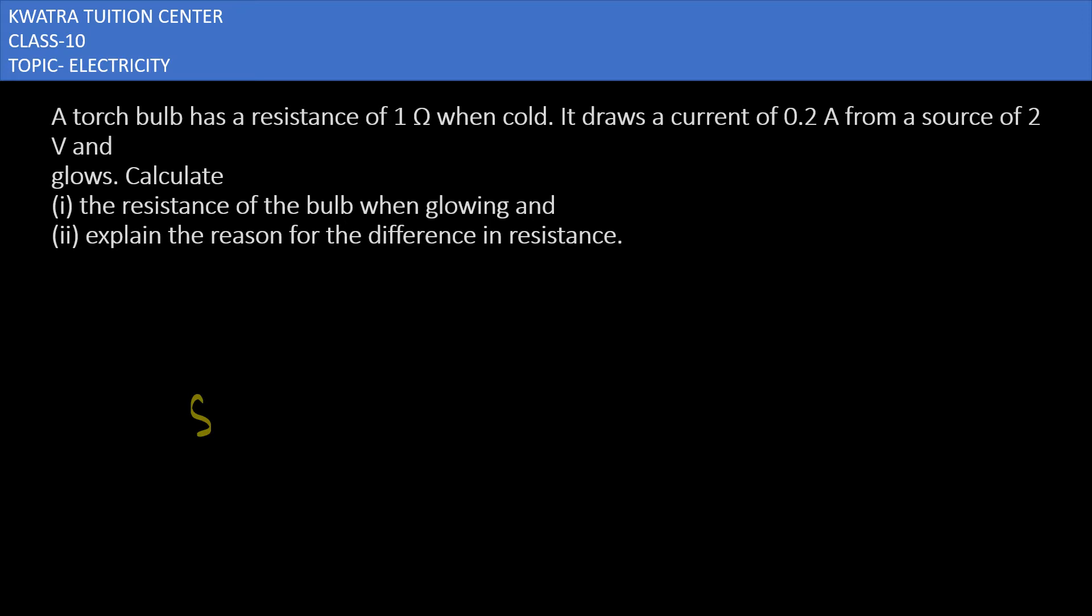So we need to find out resistance when it is glowing. Resistance, how do we write? R is equal to V over I. V value is 2, I value is 0.2.